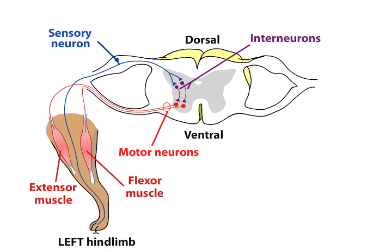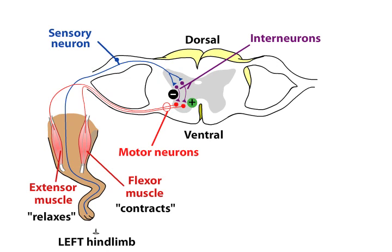Whether a particular motor neuron is excited or inhibited depends on the interneuron. In this example, an interneuron sends an inhibitory signal to motor neurons controlling the extensor muscles. An excitatory signal is sent to motor neurons controlling the flexor muscles. This permits the dog to withdraw the hind limb from the painful stimulus.